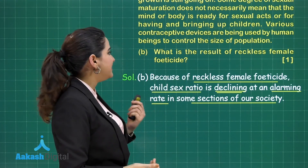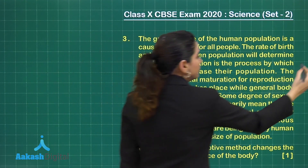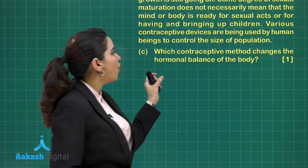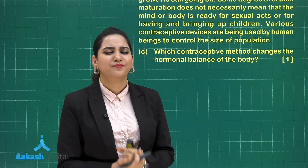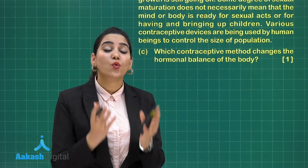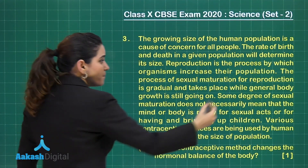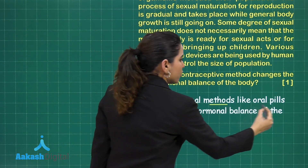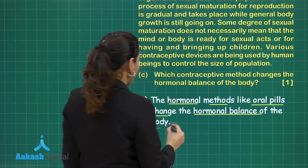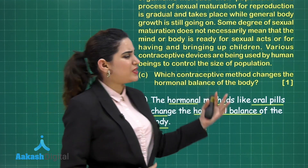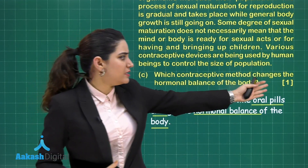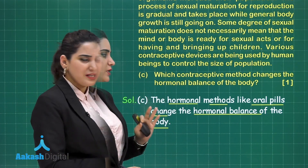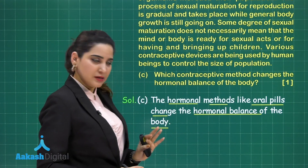Now let's begin with part C of question number 3: which contraceptive method changes the hormonal balance of a body? You already know it well — oral pills have an impact on hormonal balance. Hormonal methods like oral pills change the hormonal balance of the body. These questions are pretty direct and carry one mark, so we do not need to go beyond the details. The to-the-point answer is: oral pills.